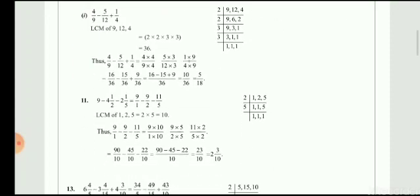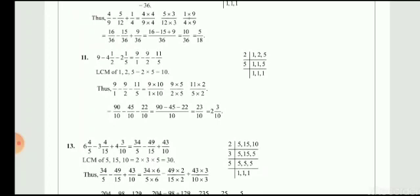Question number 13: all mixed fractions are given — 6 whole 4 by 5 minus 3 whole 4 by 15 plus 4 whole 3 by 10. First convert to improper fractions: 6 whole 4 by 5 becomes 34 by 5. 3 whole 4 by 15 becomes 49 by 15. 4 whole 3 by 10 becomes 43 by 10. Now find the LCM of 5, 15, and 10, which gives LCM 30.